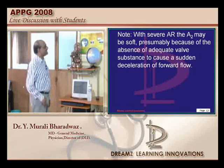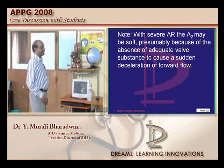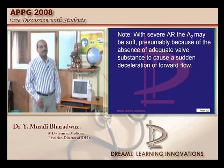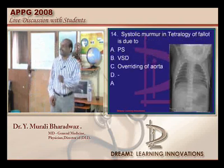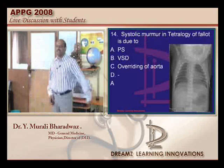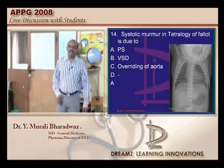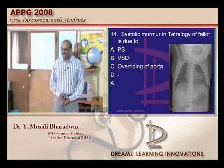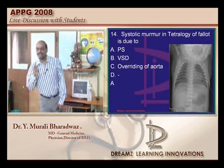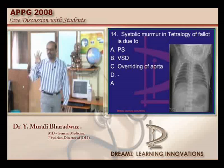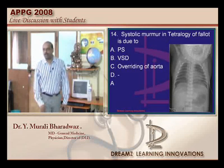Let us look at the examiner's key at a later point. Now let us go to the next question: systolic murmur in tetralogy of Fallot. Why do you listen to that? What are the three lesions in systolic — four lesions in TOF?